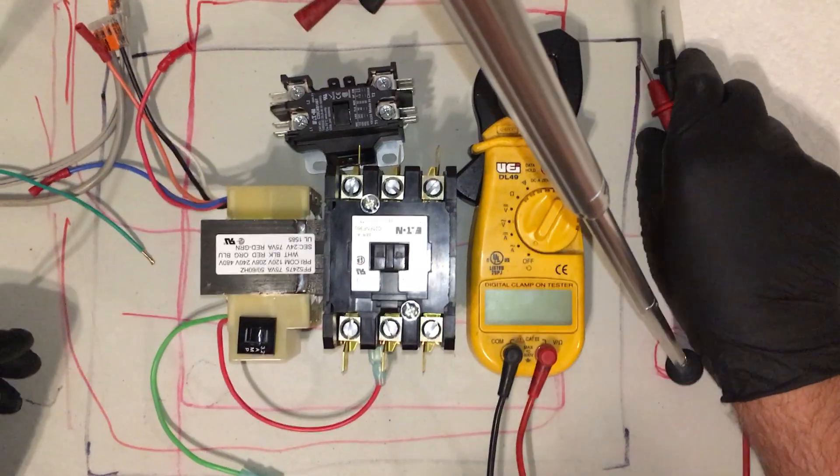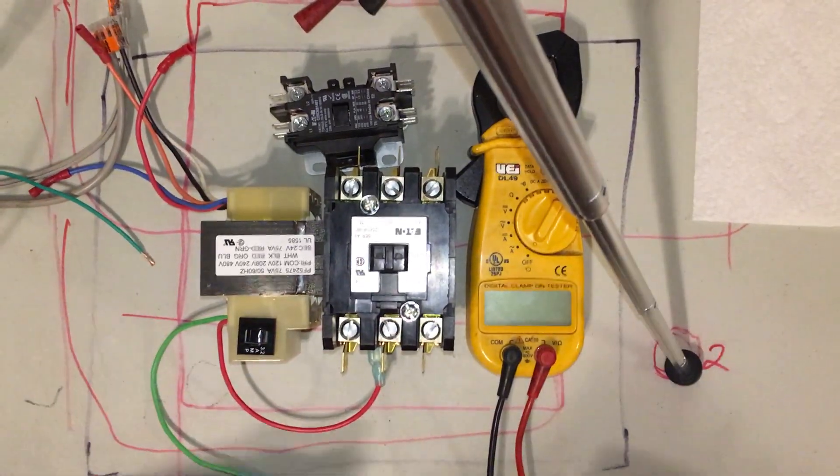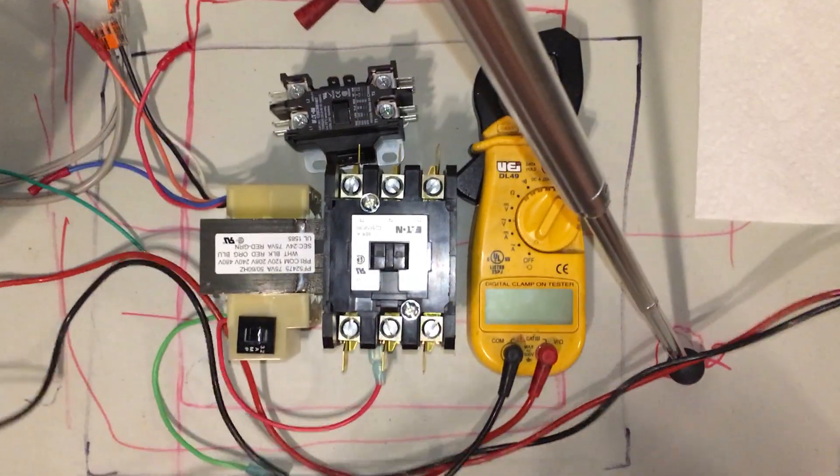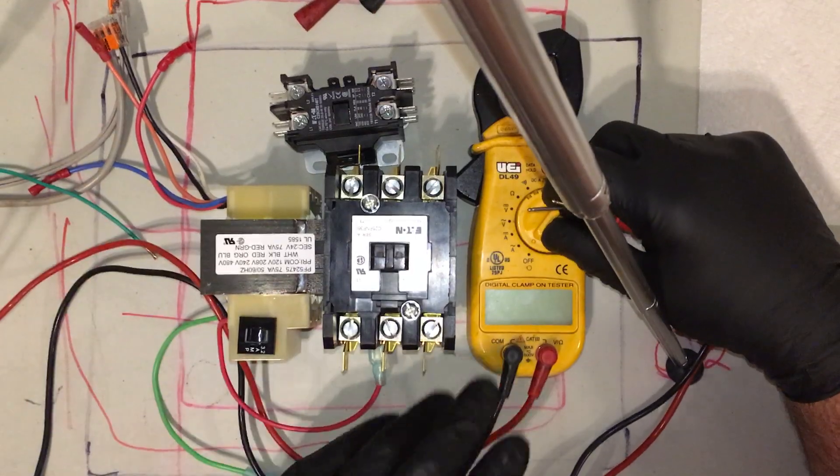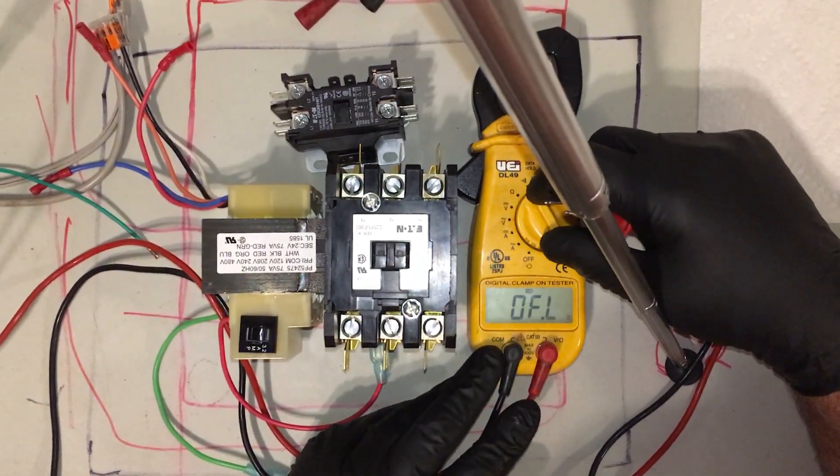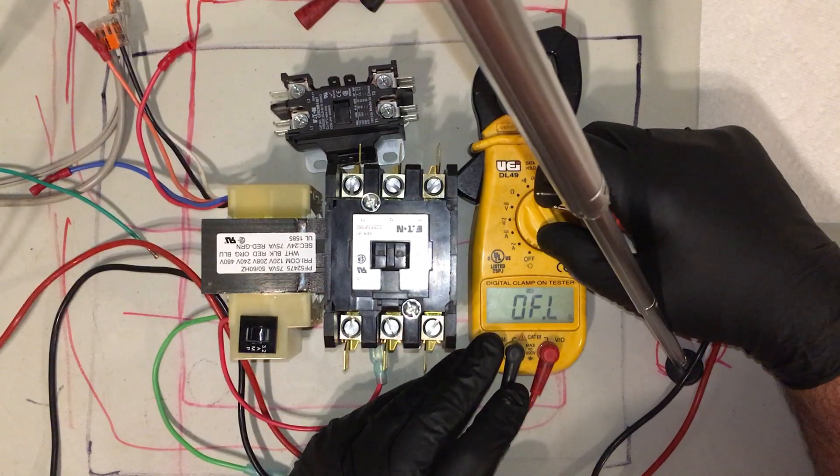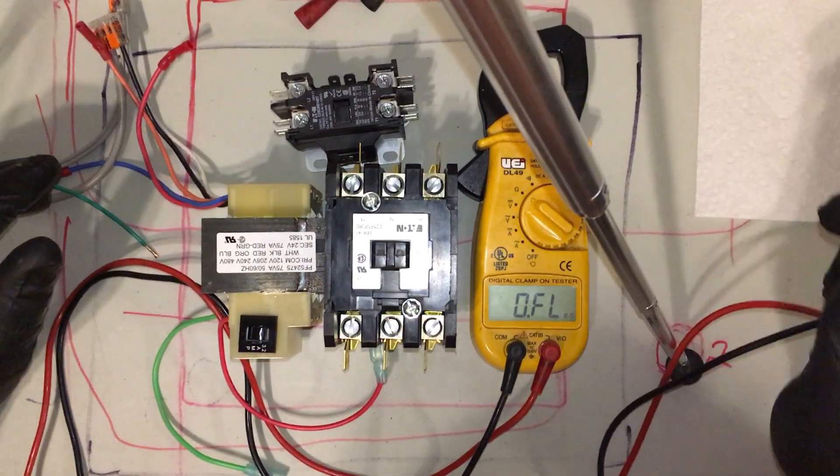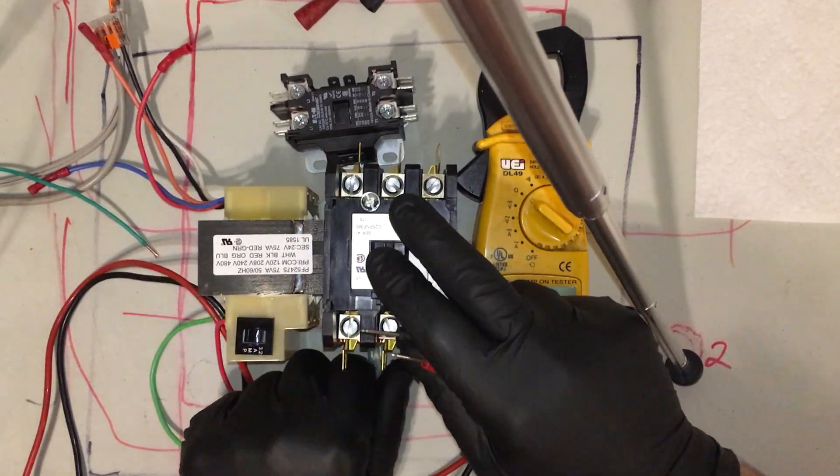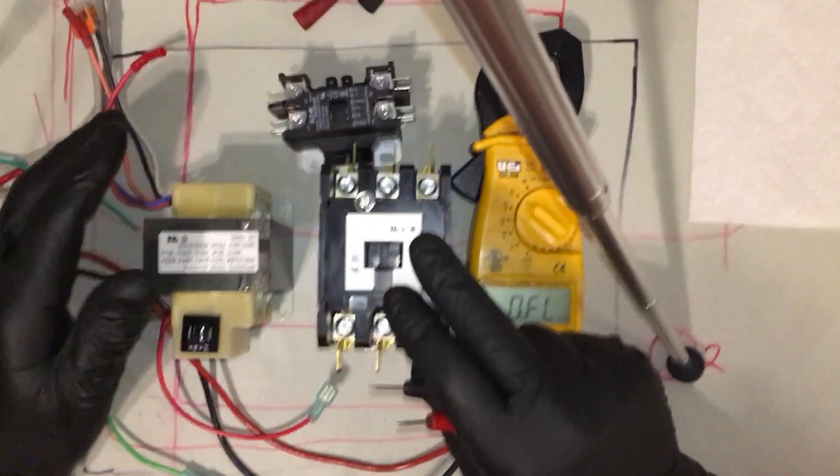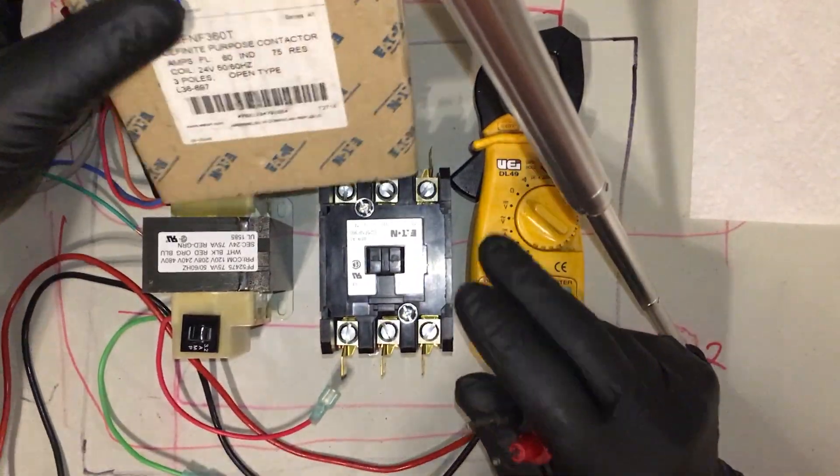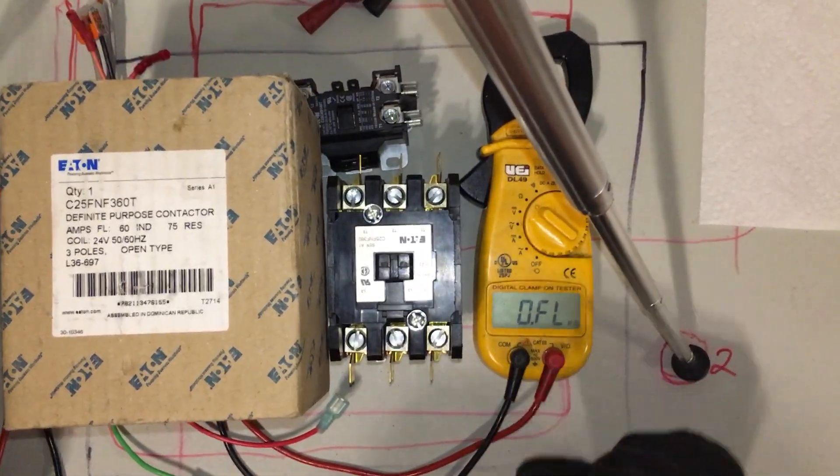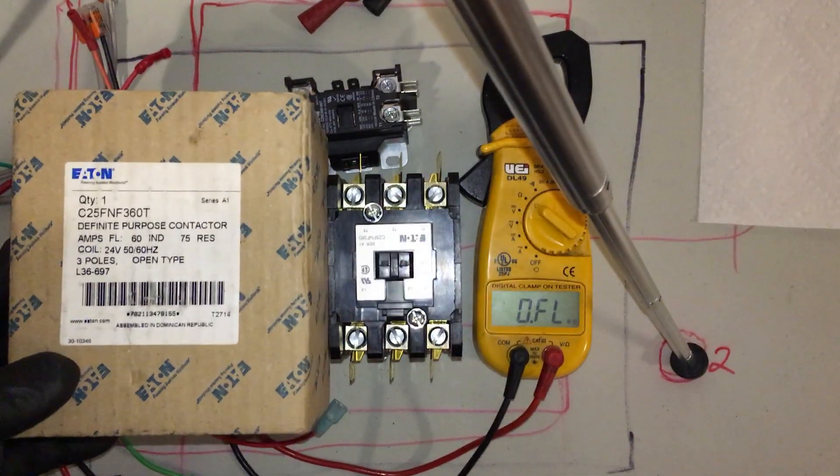This video is in response to what Bryan from HVAC School mentioned about contactors being less than six ohms resistance and that being a bad coil on the contactor. That's not a correct statement. Everything else in his video is very good, but this particular point needs correction.